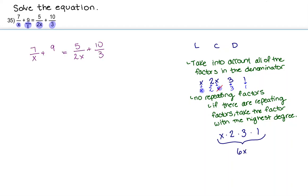So let's go ahead and take 6x, which is our LCD, and distribute it into our entire equation. So 6x times 7 over x is going to give us 42x over x. Now 6x times 9 is going to give us 54x. Now the 6x times 5 over 2x is going to give us 30x divided by 2x. And then the 6x multiplied into the 10 over 3 is going to give us 60x over 3.